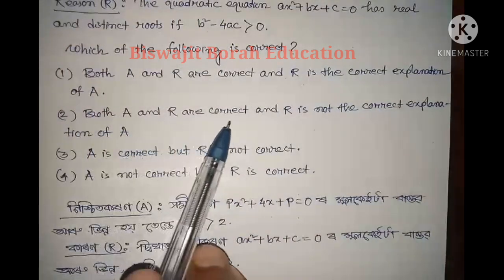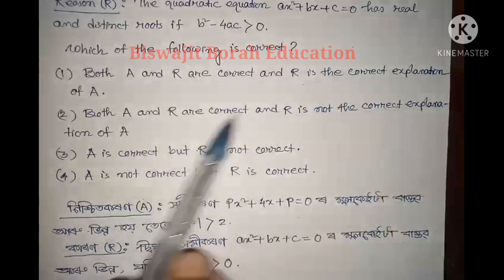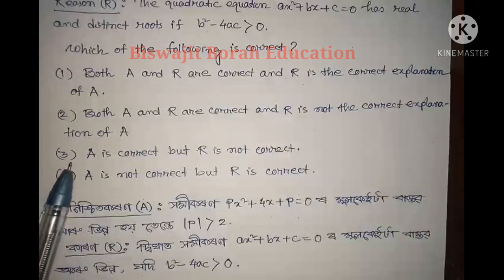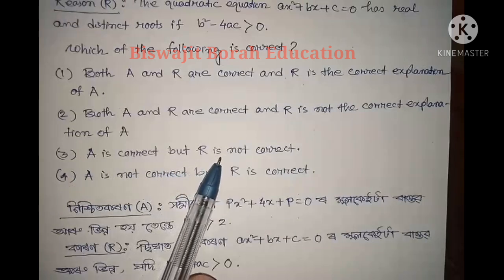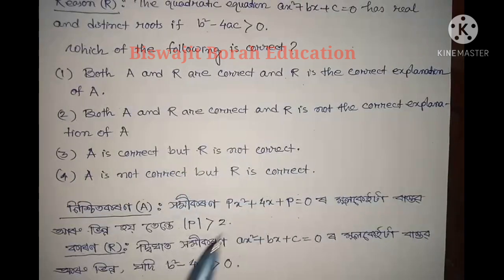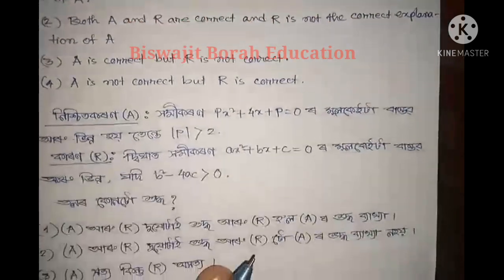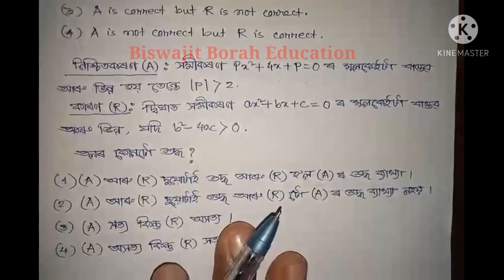Number 2: both A and R are correct and R is not the correct explanation of A. Number 3: A is correct but R is not correct. Number 4: A is not correct but R is correct.